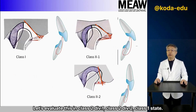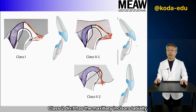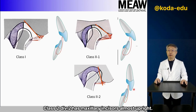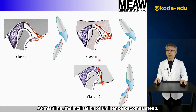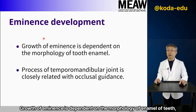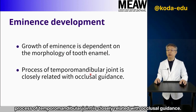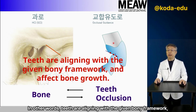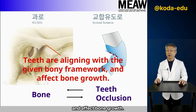Let's evaluate this in Class 2 Div 1, Class 2 Div 2, and Class 1 states. Class 2 Div 1 has the maxillary incisors proclined labially; at this point, the inclination of the eminence is flattened. Class 2 Div 2 has the maxillary incisors almost upright; at this time, the inclination of the eminence becomes steep. The inclination of eminence is affected by the growth stage and inclination of the teeth. Growth of eminence is dependent on the morphology of the enamel of the teeth. The process of the temporomandibular joint is closely related with occlusal guidance. The development of bones is related to the position of the teeth — teeth align within the given bony framework and affect bone growth.